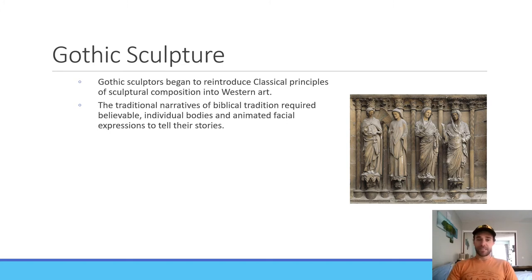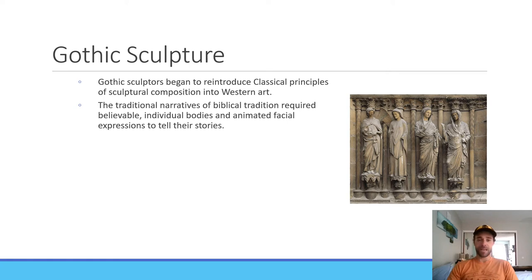In addition, we see Gothic sculptors begin reintroducing classical principles of sculpture composition into Western art. We see this on the outside of cathedrals and churches, often depicting biblical scenes or biblical characters, with individual bodies and animated facial expressions used to tell the story of characters on the outside — and sometimes inside — of these cathedrals or churches.